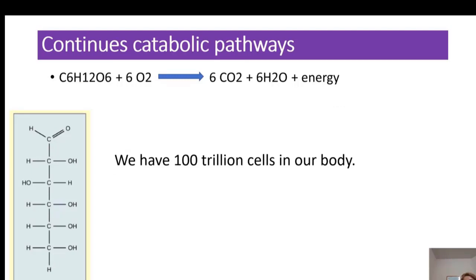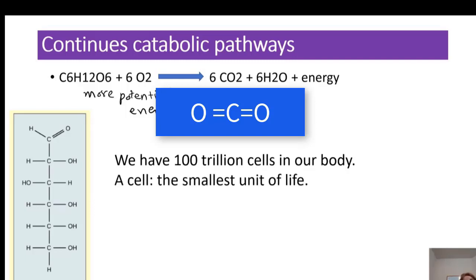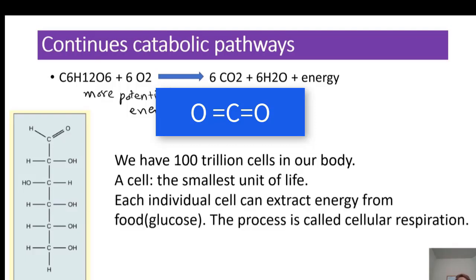Glucose has many bonds, and each bond carries chemical energy. When you break glucose down to carbon dioxide, the carbon dioxide has fewer bonds compared to one glucose molecule, meaning glucose has more potential or chemical energy. We have 100 trillion cells in our body — each individual cell can extract the energy from food, such as glucose, and use it to do work. This process is called cellular respiration.